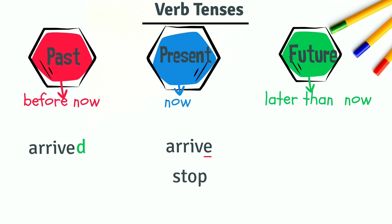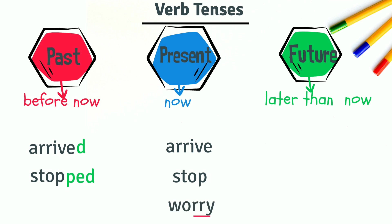When a one-syllable verb ends with one vowel and a consonant, double the last letter. For example, stop becomes stopped with double P. When a verb ends with a consonant followed by the letter Y, change the letter Y to I, then add -ED. Worry becomes worried with I.